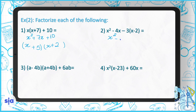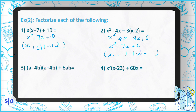Question number two: we have to expand the bracket first, so it's x squared minus 4x minus 3x plus 6, which gives x squared minus 7x plus 6. In this case we make two brackets: x and x, minus and minus. We're looking for two numbers whose product is 6 and whose sum is 7 — they are 6 and 1.